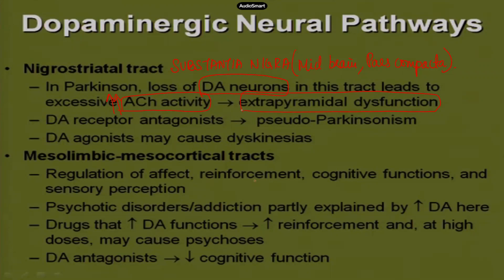Dopamine antagonists would result in pseudoparkinsonism. At the same time, the use of dopamine agonists would cause dyskinesias — they will be hyperkinetic. Dopamine is critical to allow initiation of movements; its loss results in lack of initiation of movements, which we call bradykinesia. Conversely, agonists that cause dyskinesia produce very hyperkinetic movements, causing the patient to constantly initiate the movement cascade — hence the hyperkinetic dyskinesias. Giving dopamine antagonists will cause pseudoparkinsonism.